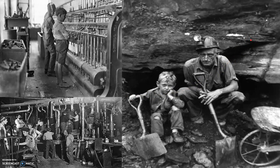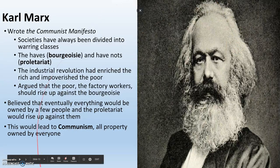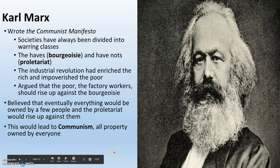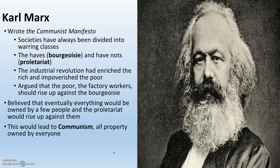These people are paid a lot of times in what is called company tokens or company money. The factories are making their own form of money that can only be spent at their own stores — so they're keeping all their money in-house and basically only paying these workers enough to survive. This is when a man named Karl Marx comes about. He's German, seeing the Industrial Revolution occur in Germany. He writes a book called The Communist Manifesto. He sees society as divided into two: the bourgeoisie — the rich — and the proletariat — the poor. He believes the Industrial Revolution has enriched the rich and made the poor much, much poorer. He argues the proletariat should rise up against the bourgeoisie and create a new form of government called communism, where all property is owned by everyone and used to make everyone better off.